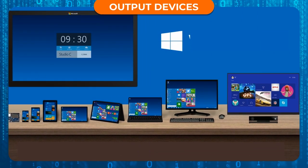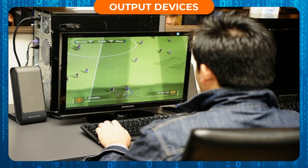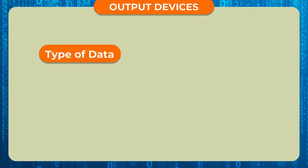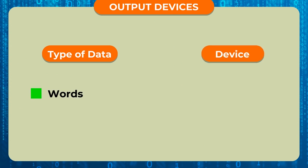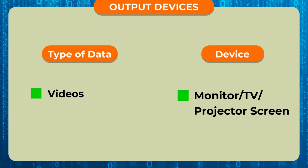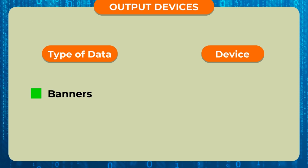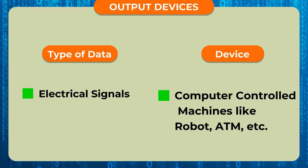Therefore, to get these things, you need certain types of devices. The following types of information can be output using the following devices: Words and Numbers use Monitor and Printer; Sounds use Speaker Set or Headphone; Images use Monitor and Printer; Videos use Monitor, TV, or Projector Screen; Maps and Graphics use Plotter; and Electrical Signals go to Computer-Controlled Machines like Robots and ATMs.